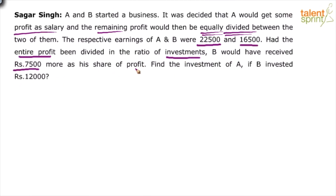Overall, A and B started a business; B invested 12,000 and we have to find A's investment. In case one, A gets some part as salary and the remaining profit is divided equally, giving earnings of 22,500 and 16,500 respectively. In case two, the entire profit is divided in the ratio of their investments, and B would have received 7,500 more as his share.